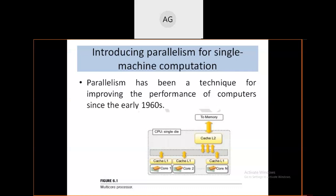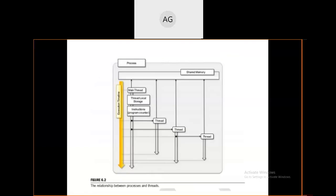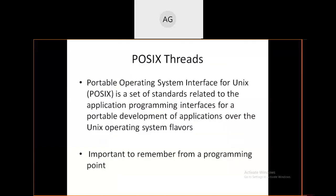All these come under parallelism. These things were already covered implicitly. We also discussed threading explicitly — what a thread is, the relationship between threads and processes, how processes and threads work, how threads enter the main thread, and how the main thread is executed with the help of the process.